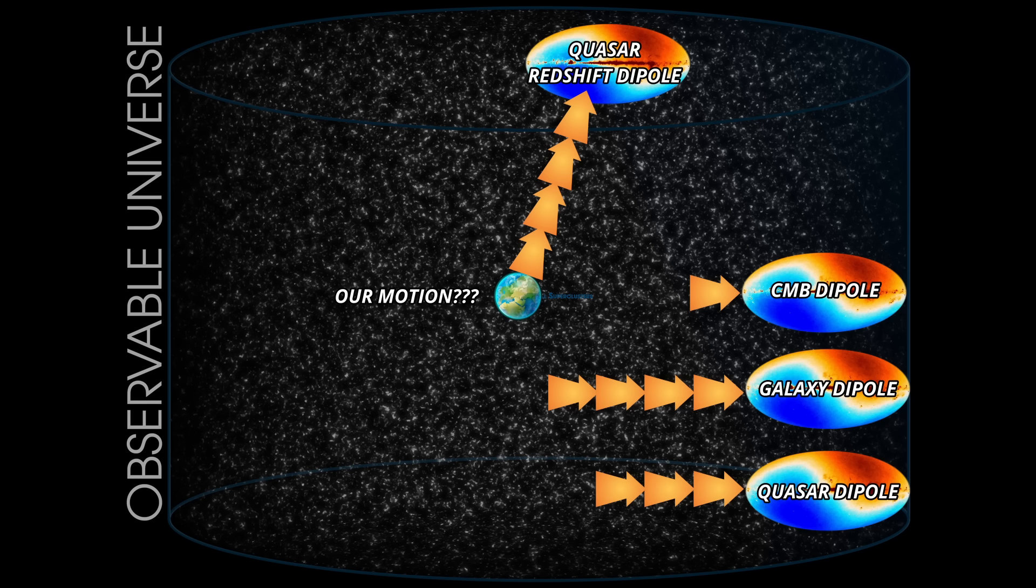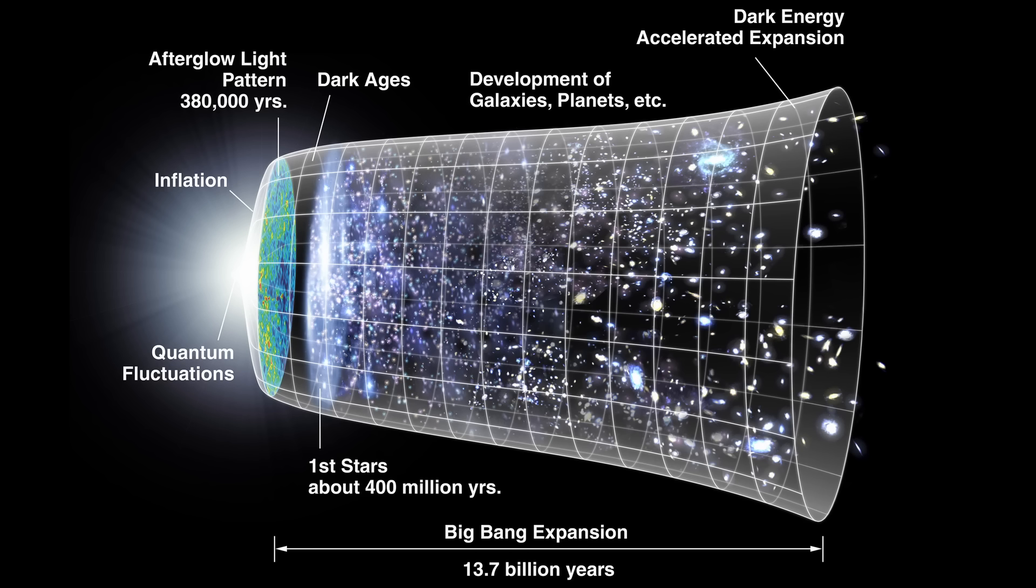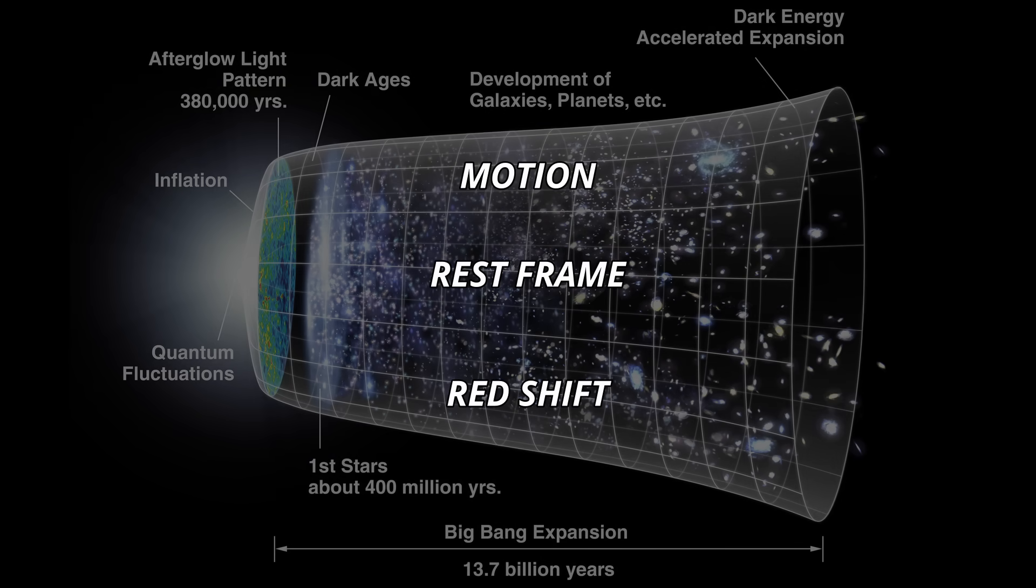The tension isn't pointing to a flaw in the catalogue or survey. It's pointing straight to the assumptions we use to interpret the entire universe. And that's where this new radio result becomes more than a curiosity. It forces us to look at the foundations of the model. How we define motion, how we define a rest frame, and what we think redshift is actually measuring. These ideas sit so deeply in cosmology that they're rarely examined. We simply accept them because everything else depends on them. But when independent observations tug on the same assumption from different directions, you can no longer treat those assumptions as untouchable. Something fundamental is being exposed.